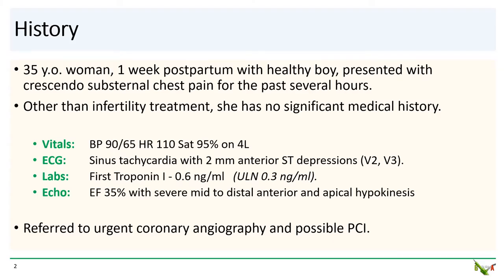The patient is a 35-year-old woman, one-week postpartum, who presented to our ER with crescendo substernal chest pain that started a few hours ago. She has no significant past medical history other than infertility treatment. She did not look well. Her blood pressure was 90 over 65, her heart rate was 110, and her oxygen saturation was 95% on 4 liters. ECG showed sinus tachycardia with 2 millimeters of ST depressions in leads V2 and V3.